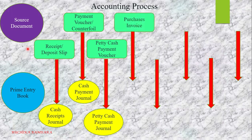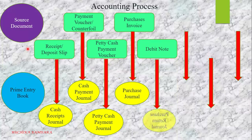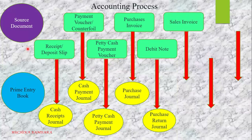Next is a purchase invoice. When you buy goods on credit, you have to record it in the purchase invoice, and from that we are making the purchase journal. Next is a debit note for the purchase return journal — whatever credit purchases you have bought, if you want to return them, you record it in the purchase return journal. Then the sales invoice records all credit sales, and the primary book for that is the sales journal.